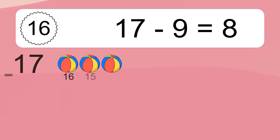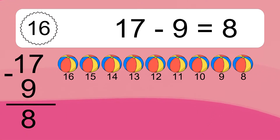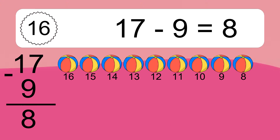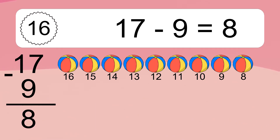17 minus 9 equals 8. Let's count it: 16, 15, 14, 13, 12, 11, 10, 9, 8.